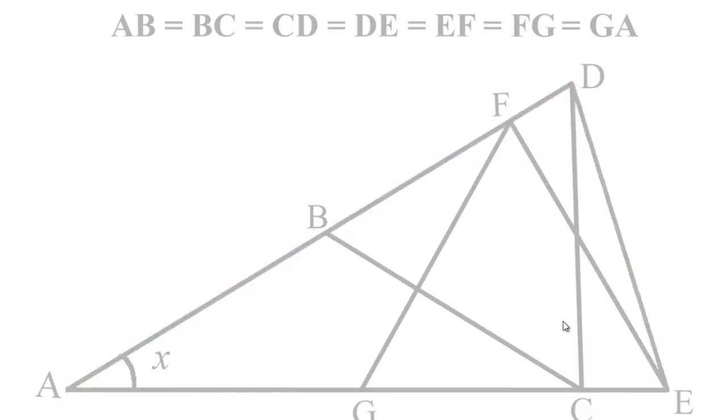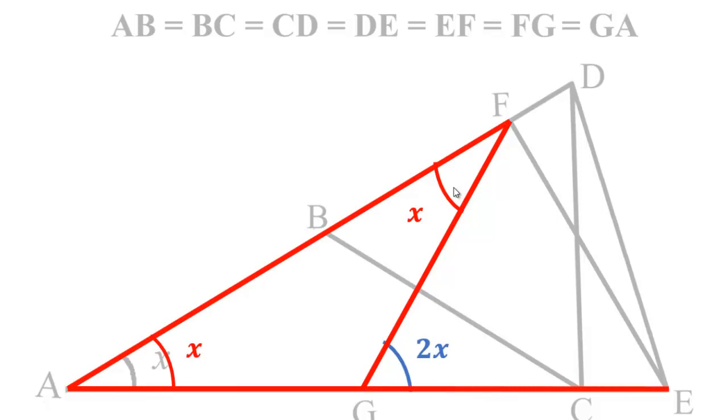So let us again start the same procedure. Side AG equal to side AF. So by property one, angles GAF and GFA are equal to X. By property two, angle FGE equal to 2X.